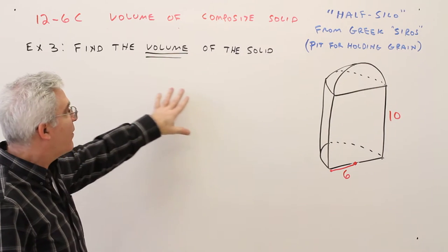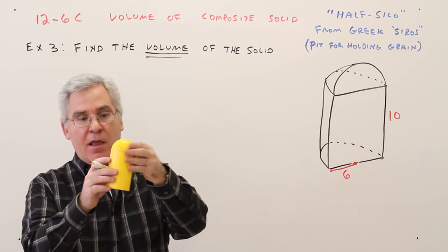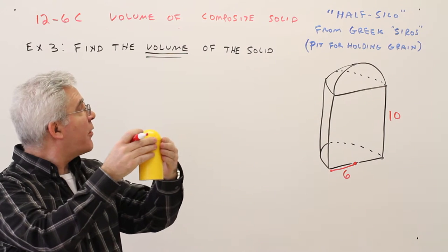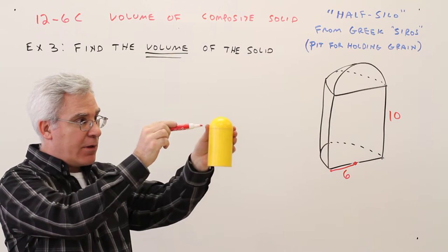So this is example three, find the volume of the solid shown. So this is a cylinder with a hemisphere on top. So notice what I'm going to do is I'm going to chop the silo in half.